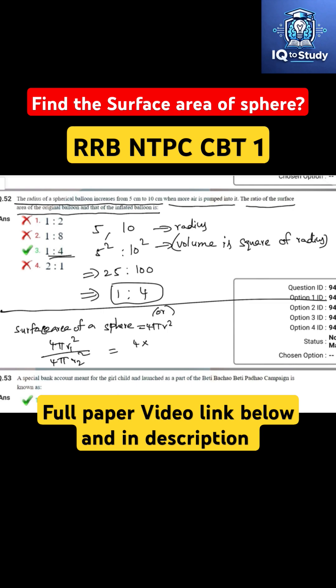4 into 22 by 7 into r1 is 5, so 5 square is 25, divided by 4 into 22 by 7 into r2 is 10 and 10 square is 100. After simplifying, it becomes 1 by 4.